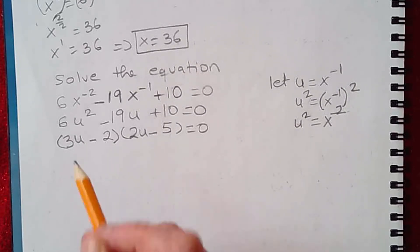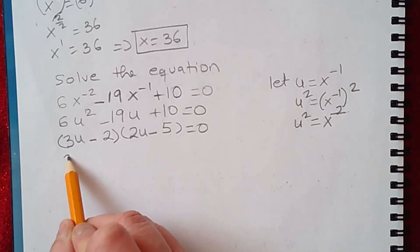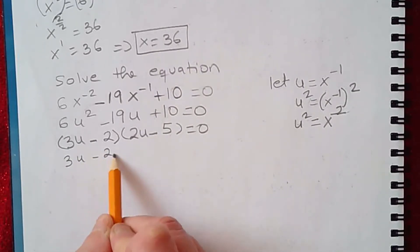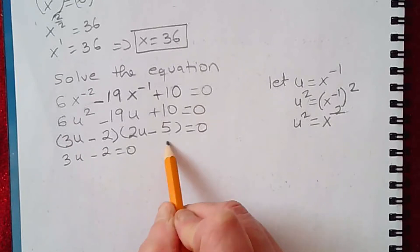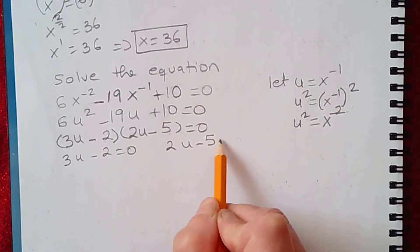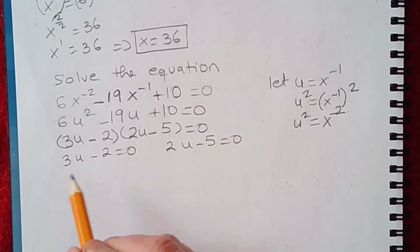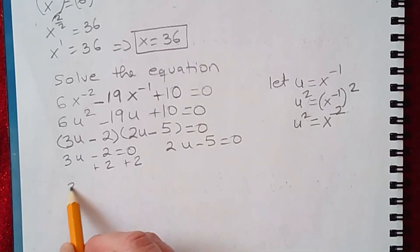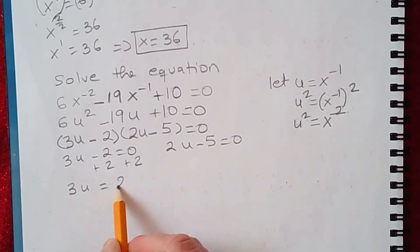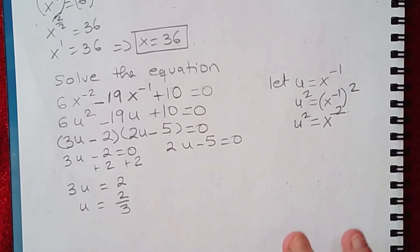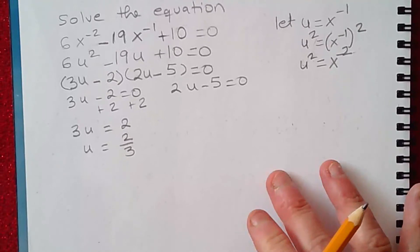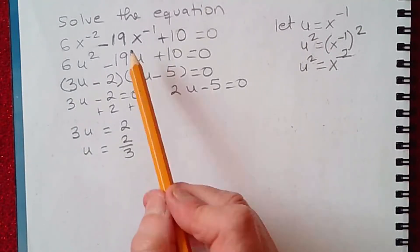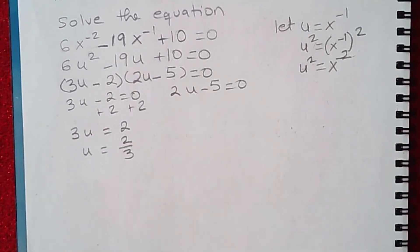With this, let's go ahead and solve. We get 3u minus 2 equals 0 or 2u minus 5 equals 0. Solving for u, let's start with this one. We add 2 on both sides, we get 3u equals 2, and then u equals 2/3. Now this is a solution for u. I need to go back to my original variable which is x.